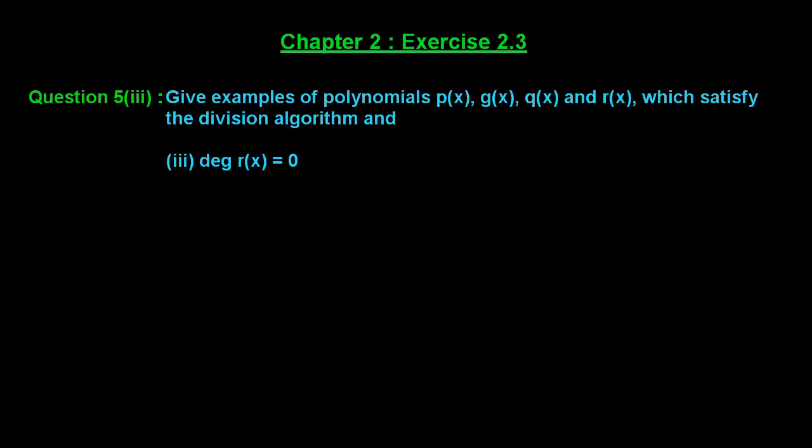Welcome friends. Let us solve the third part of question number 5 of exercise 2.3 of chapter 2. The question says: give examples of the polynomials p(x), g(x), q(x), and r(x) which satisfy the division algorithm and the degree of the remainder r(x) equals 0.